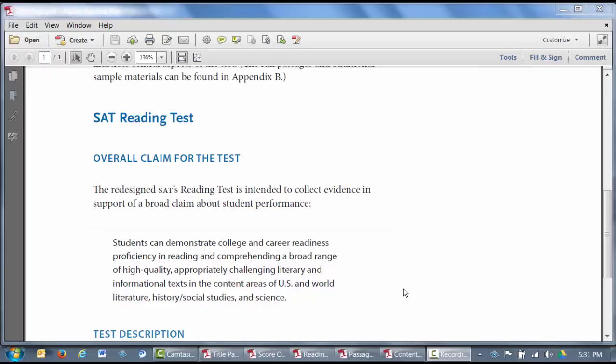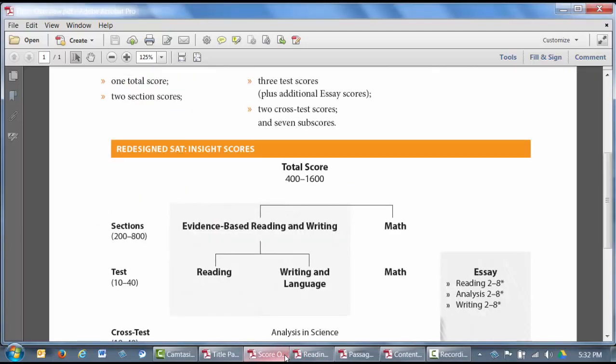The reading test is designed to measure how ready you are to read and interpret the kinds of texts you're likely to encounter in college and in your career. The reading test is scored on a scale of 10 to 40. Your score on the reading test and your score on the writing and language test combine to give you your evidence-based reading and writing score, which is on a scale of 200 to 800.